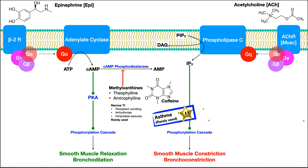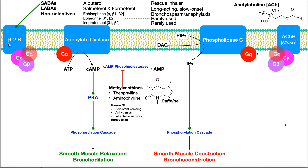The next class of drugs are those that bind to and activate the beta-2 receptor — these would be beta-2 agonists. There are really three types: the SABAs, the LABAs, and then non-selectives. SABAs are short-acting beta agonists, and the main one is albuterol. When you think of short-acting beta agonists, these are basically your rescue inhalers. Not only are they short-acting, but they're also rapid-acting. So if somebody is having an acute asthma attack, the rescue inhaler is what you want to use because even though it doesn't last long, its onset is very quick.